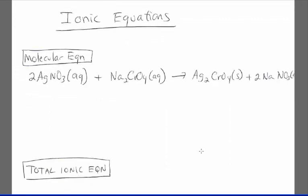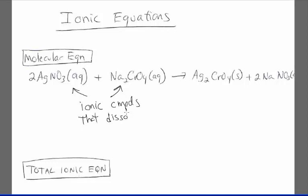Let's talk about ions again and different types of ion equations. We have three different types of ionic equations: the first is the molecular equation, which is the one we've been talking about so far, where you list molecules and their states — reactants and products. The AQ written after compounds means that they are dissolved.